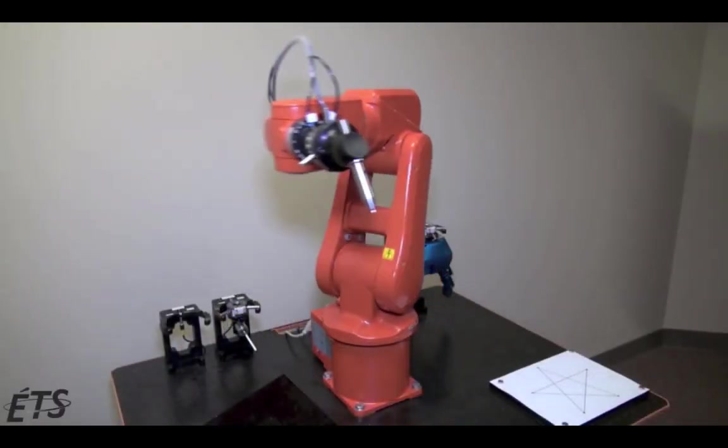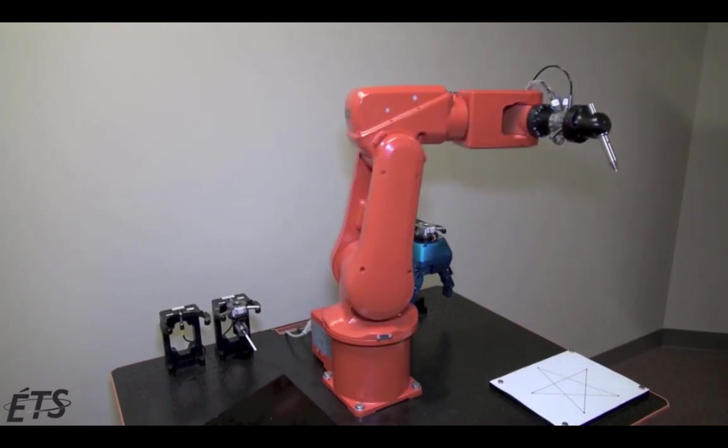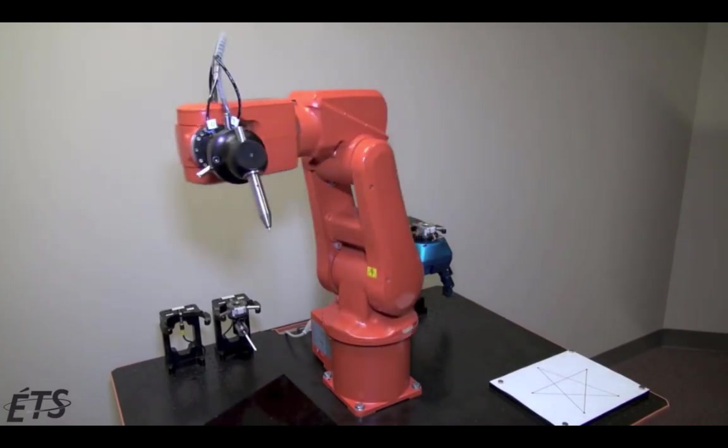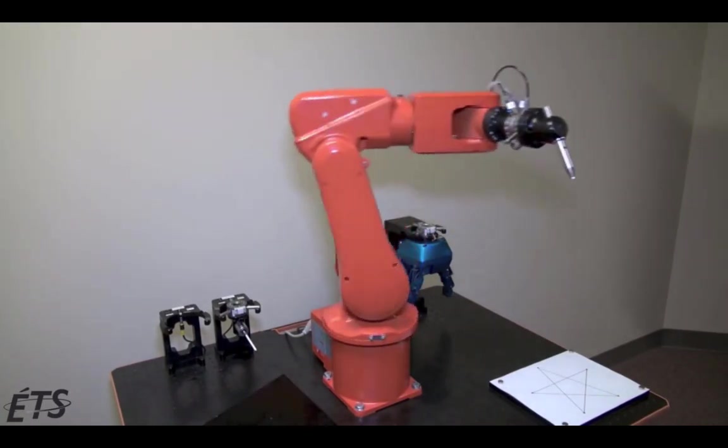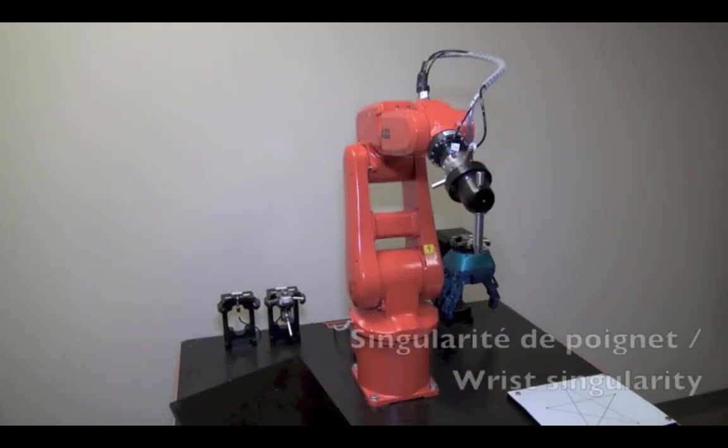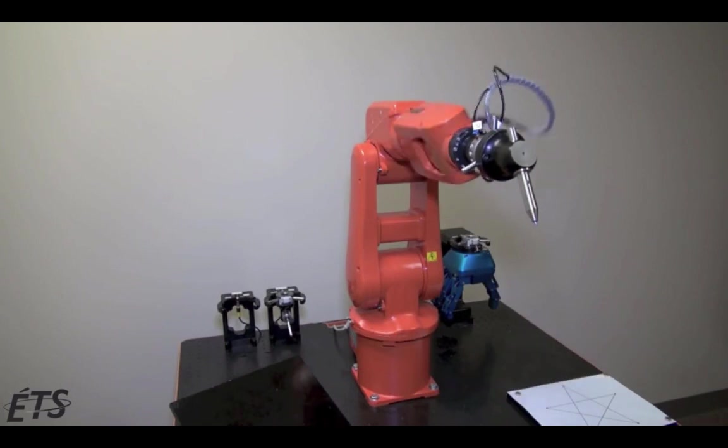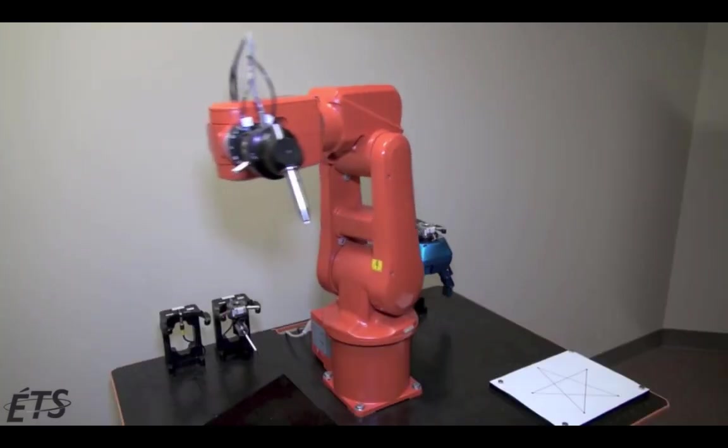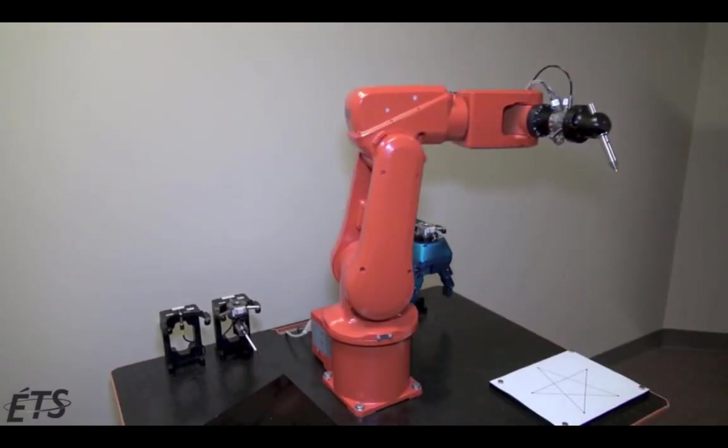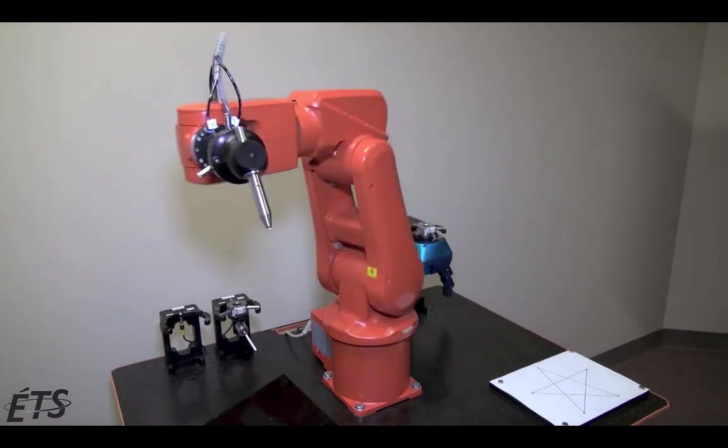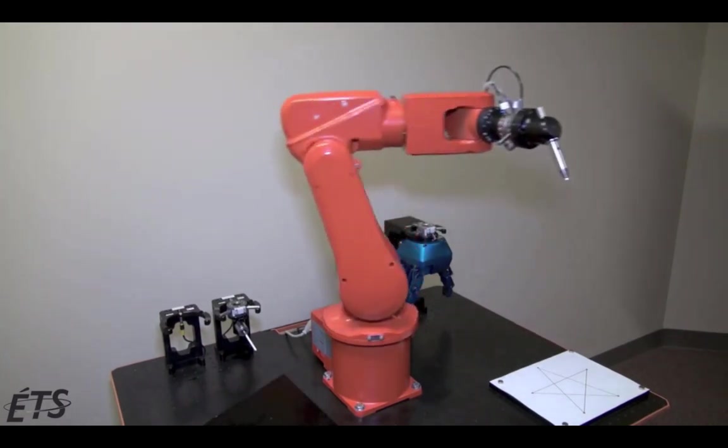I like this video because it demonstrates robot singularities. It shows various examples of the three types of singularities that can occur with a six-axis robot. And then for each example, it first shows the robot at the singularity position, and then shows the robot trying to move at a constant velocity on a straight line path that intersects the singularity.